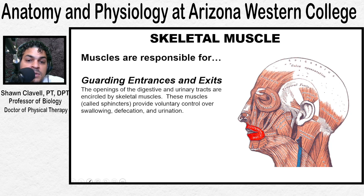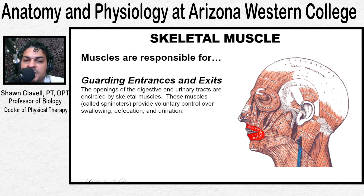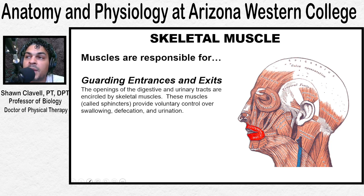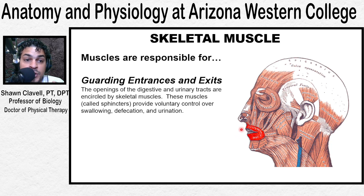Skeletal muscles are located throughout the body at openings of internal tracts. They help control movement of various substances. This allows functions such as swallowing, urination, defecation, and the like to be under voluntary control. We can see here there's a muscle by the name of orbicularis oris — that circular mouth muscle that's responsible for the entrance and exit of nutrients into the alimentary tract.